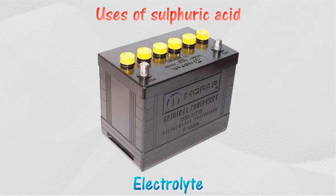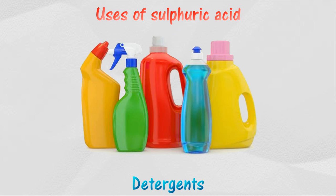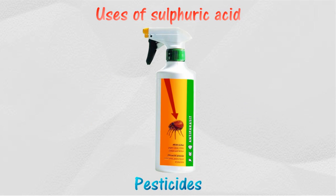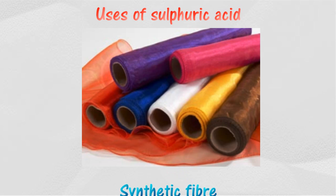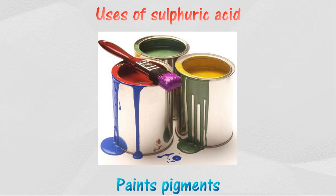Detergents are synthetic cleaning agents made from sulfuric acid. The manufacture of pesticides and insecticides also uses sulfuric acid. Synthetic fibers such as rayon are produced from the reaction of sulfuric acid on cellulose.